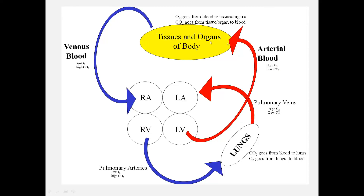Blood goes out to all your tissues and organs, where gas exchange occurs: oxygen goes from the blood to the tissue, and carbon dioxide goes from the tissue to the blood. The vessels that drain your tissues and organs are veins, carrying venous blood. By definition, a vein takes blood back to the heart, whereas an artery takes blood away from the heart. The venous blood returning is relatively low in oxygen and high in CO2, because the oxygen was delivered to the cells. That's why it needs to go back to the heart.